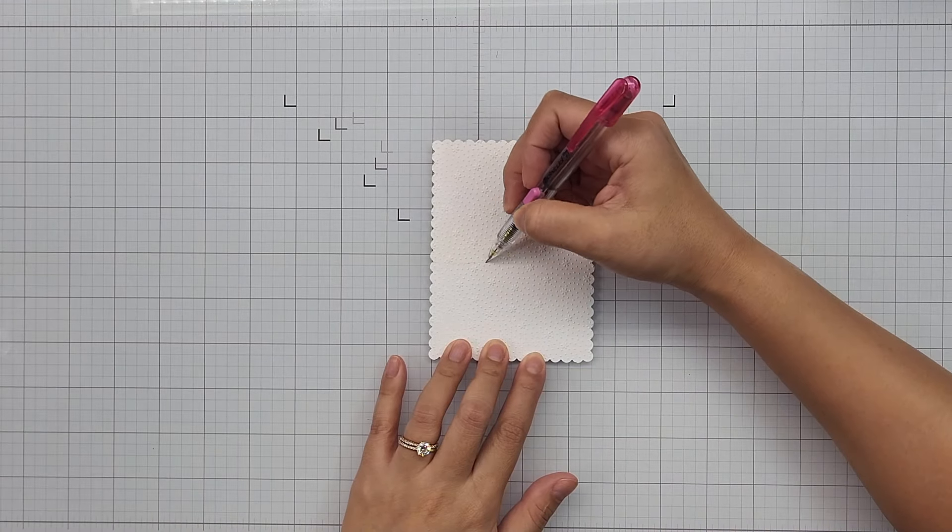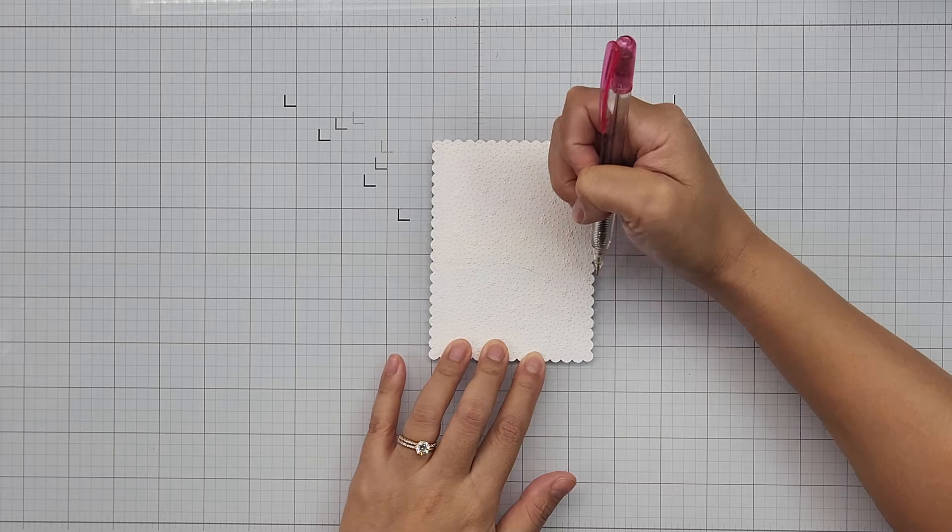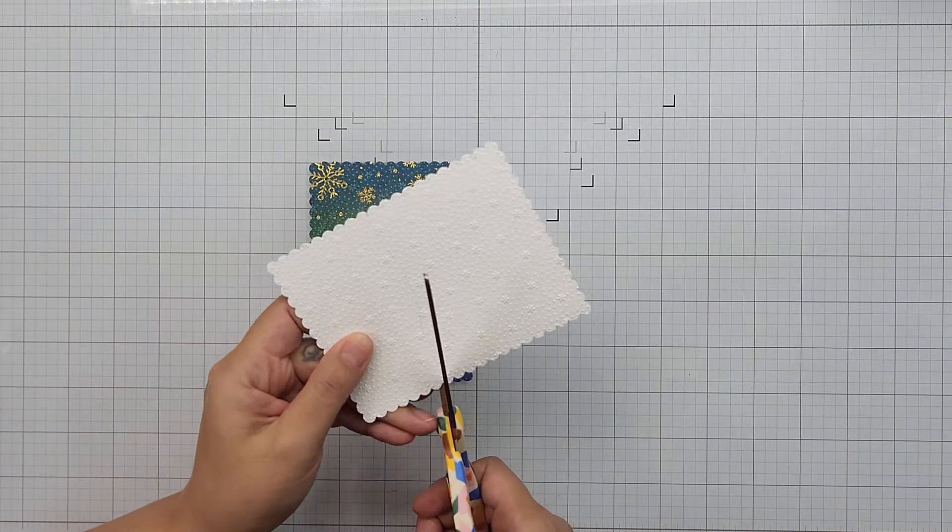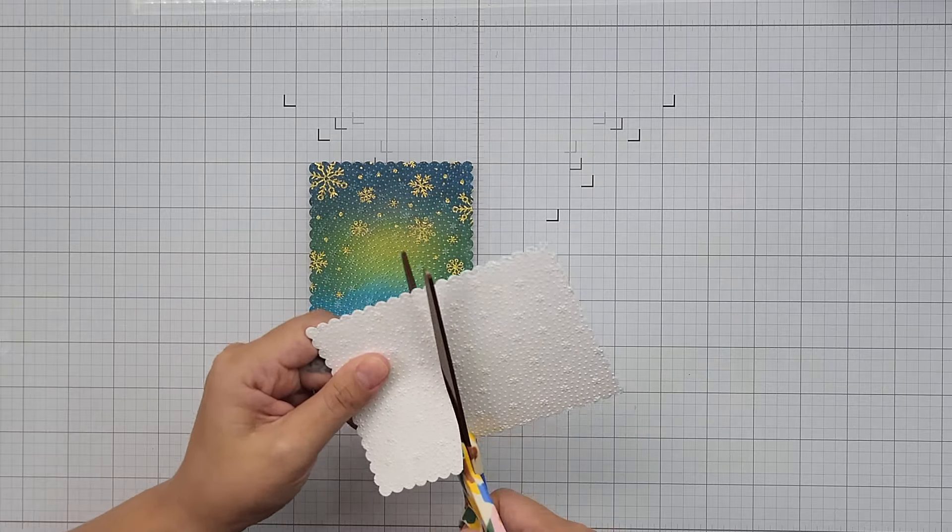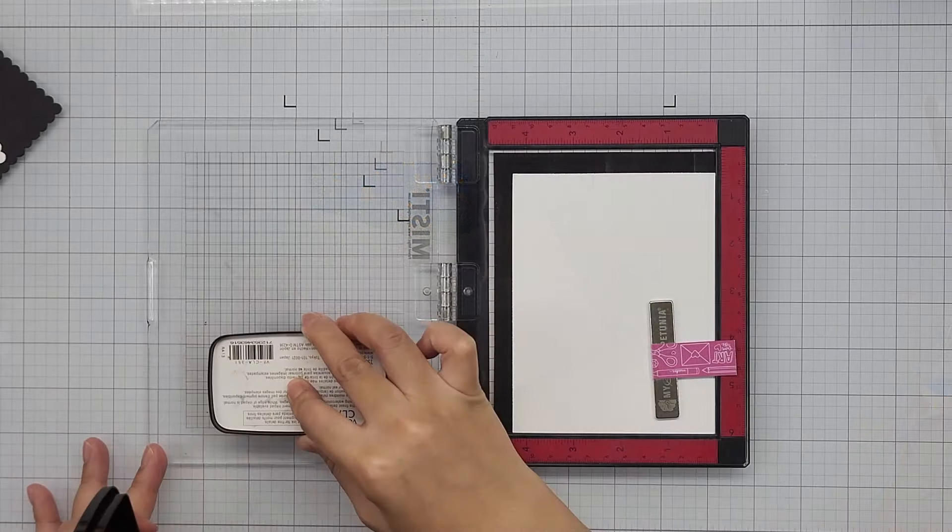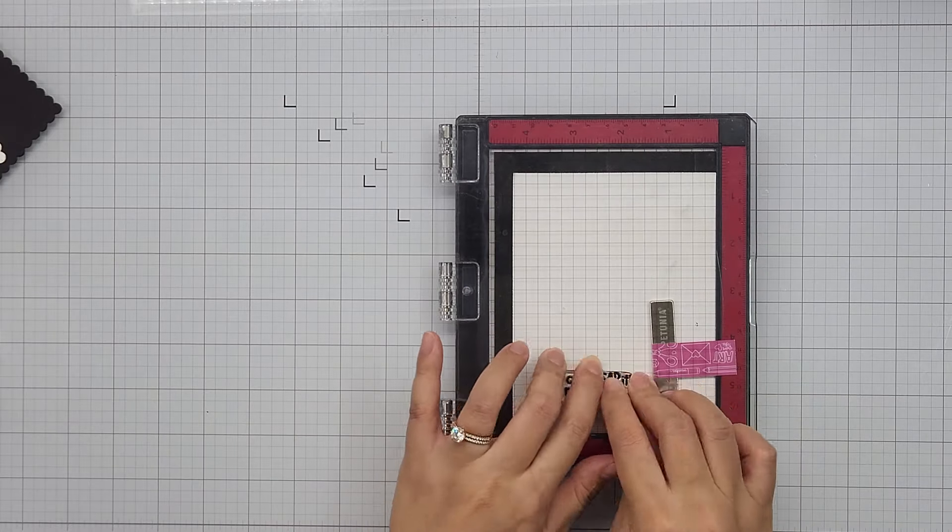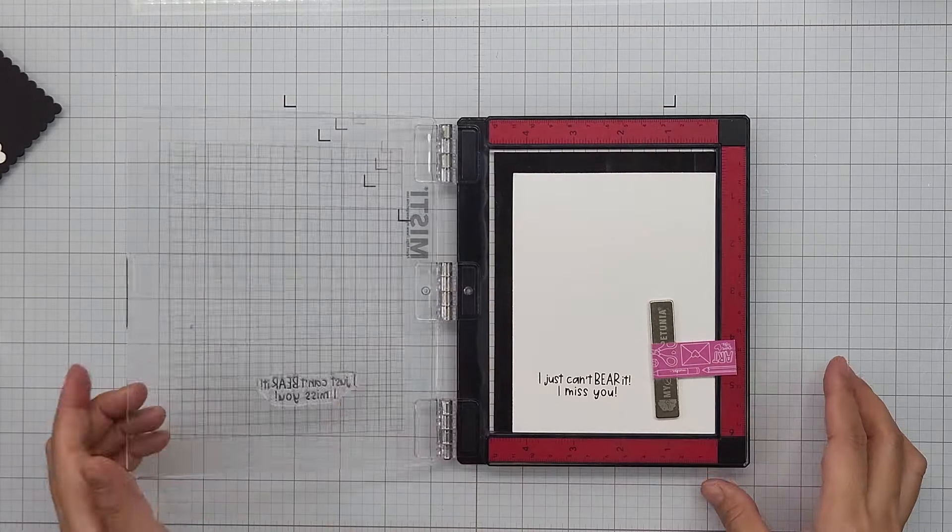For the sentiment, I stamped a sentiment from Berry Much Love stamp set with VersaMark Clear ink and heat set that with clear embossing powder.